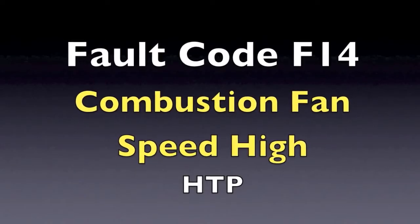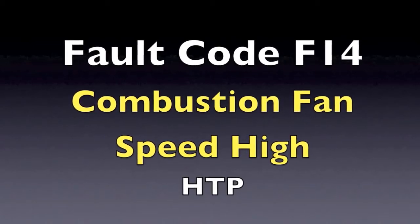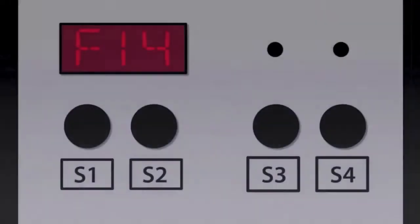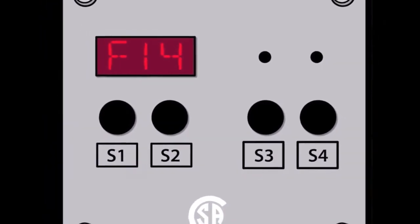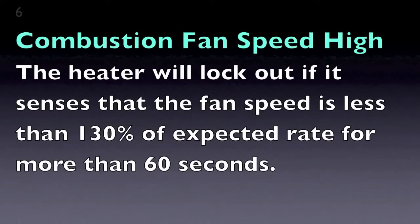If you are getting an F14 fault in the display, this fault occurs when the fan speed is not running at the speed that the control has commanded it to run. The fan speed ran faster than the command speed from the controller for more than 10 seconds.